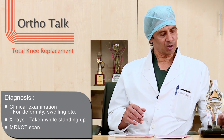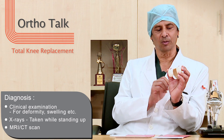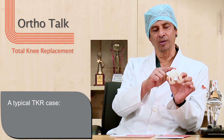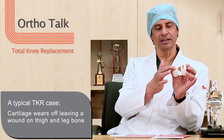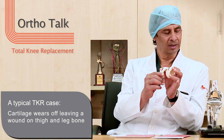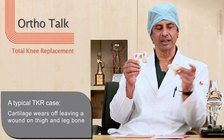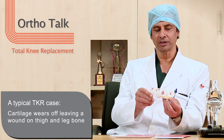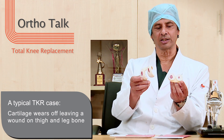I would like to show you on this model — this is a little plastic model. The white is the normal bone and these red areas are where the cartilage has gone. So this is like an ulcer, it is like a wound. This is the thigh bone, this is the leg bone, and you can see on both these parts that there are areas where the cartilage is lost.